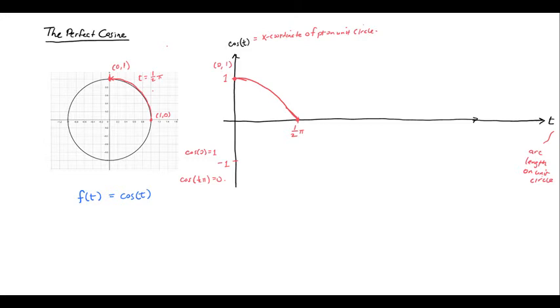All right, now what happens after that? So after that, let's let t run from 1 half of pi to pi. So when t is pi, I'm at the point negative 1 comma 0. So that means that cosine of pi is going to be that x-coordinate, which is negative 1. So when I'm at pi, my cosine is going to be negative 1.